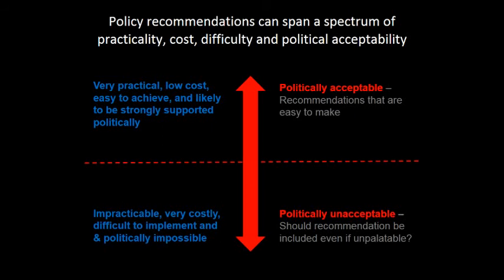Political acceptability can be thought of on a spectrum. Politically acceptable recommendations are easy to make and accept - they're very practical, low cost, easy to achieve, and likely to be strongly supported politically. For example, if you recommend to a government that is very supportive of farmers that they fund an education program going out and helping farmers achieve good outcomes - low cost, no one's hurt, no restrictions on farmers, that's politically really easy. Education and research are typically easy to recommend.